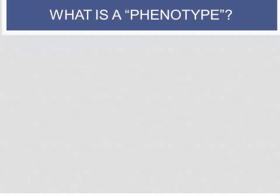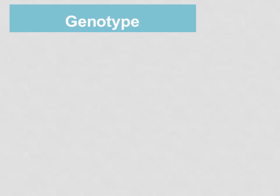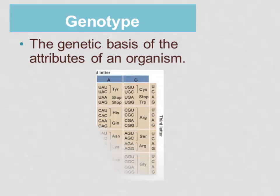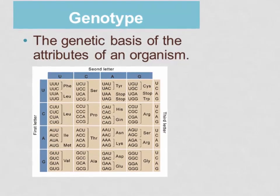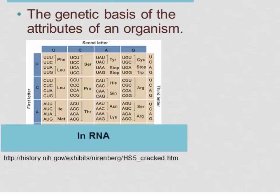Let's start with the question: what is a phenotype? Because if we're going to discuss the phenotypic gambit, we have to know what a phenotype is. This is an opposition between the genotype — the genetic basis of the attributes of an organism — and the phenotype. In the early 1960s, scientists at the National Institute of Health figured out what's called the triplet code, which relates triplets in the bases of RNA to specific amino acids.